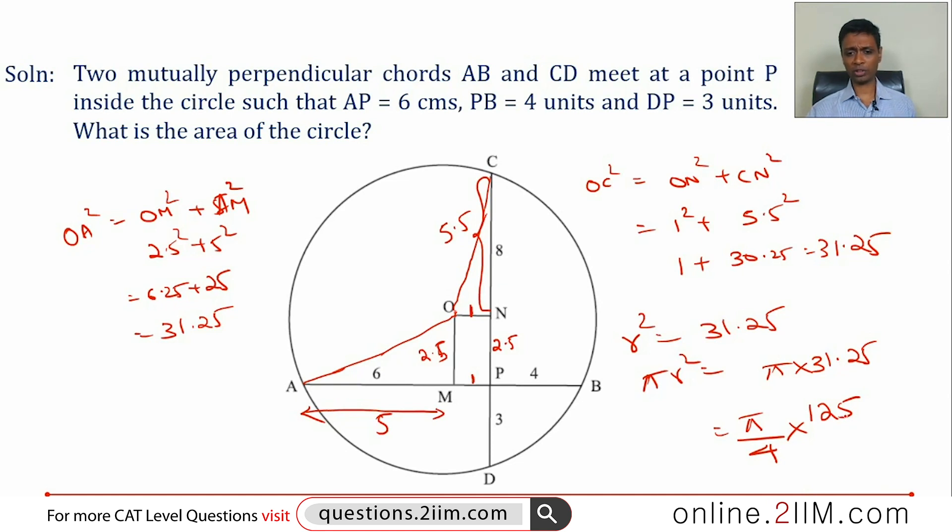The two properties are important. One is Pythagoras theorem - we'll keep using that over and over again. Second property: from the center of a circle, if you draw a line perpendicular to a chord, it will bisect the chord. From center of a circle, if you draw a line to midpoint of the chord, it will be perpendicular to the chord. These lines OM and ON - if I draw it to the midpoint, it will happen to be perpendicular. That one property is going to be the bedrock for a number of questions on geometry, especially with circles.